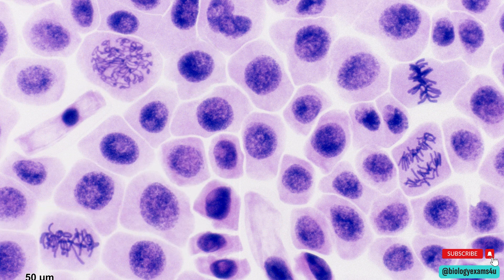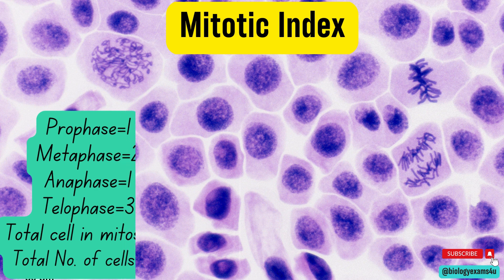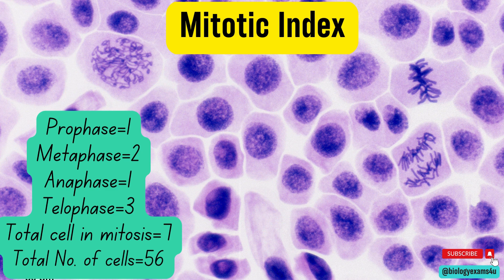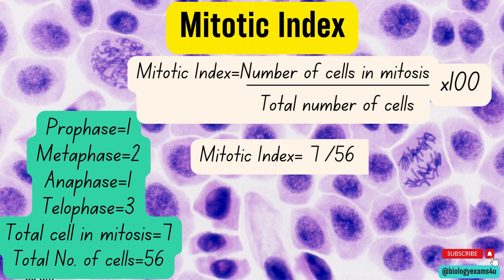Now we have the number of cells undergoing mitosis, so it is very easy to calculate the mitotic index. First, count the total number of dividing cells: prophase one, metaphase two, anaphase one, telophase three — so the total number of dividing cells is seven. The total number of cells in this field is roughly 56, counting both dividing and non-dividing cells. Therefore, mitotic index equals total number of dividing cells divided by total number of cells — here it is 7 divided by 56, that is 0.125, or 12.5 percent.